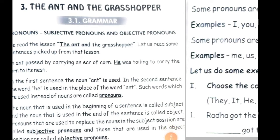In the first sentence the noun 'ant' is used; in the second sentence the word 'he' is used in place of the word 'ant.' Such words which are used instead of nouns are called pronouns. Jo words noun ki jagah pe use hote hain unko pronoun kehte hain. The noun that is used in the beginning of a sentence is called the subject, and the noun used at the end of the sentence is called the object.